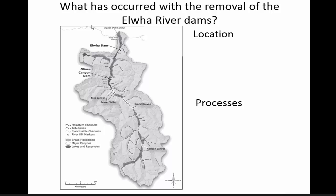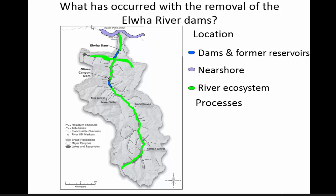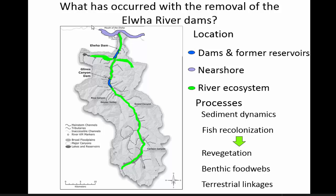I'm going to focus on what has occurred with the removal of the Elwha River dams, addressing it two ways. First by location — I'll cover the dams and former reservoirs, the nearshore, and the river ecosystem. Then I'll talk about processes: how sediment has moved through the system, how fish have recolonized it, and how these two processes have affected revegetation of the reservoirs, the food web in the river system, and linkages to terrestrial animals such as birds and river otters.